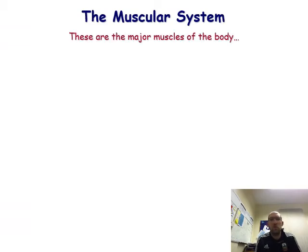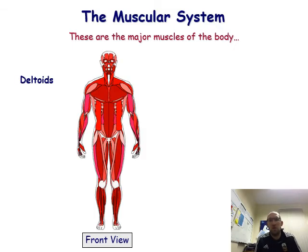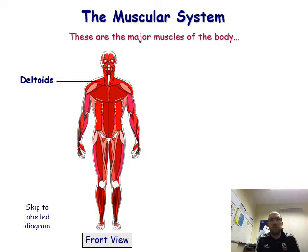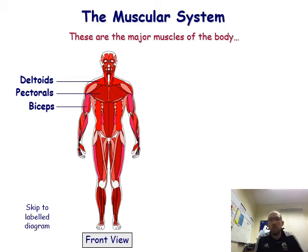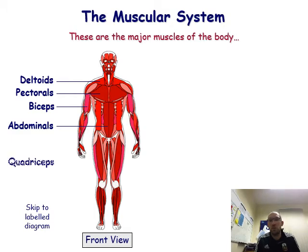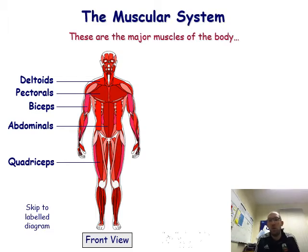We have to go through the major muscle groups of the body. From the front view, you have the deltoids at the top of the shoulder, the pectoral muscles in the chest, the biceps in the upper arm, and the abdominal muscles in the stomach, and the quadriceps in the upper thigh.